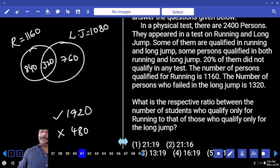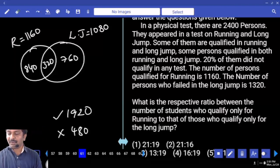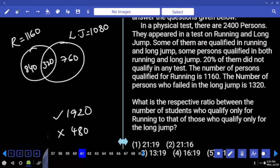What is the respective ratio between number of students who qualify only for running to those qualify only for long jump? Only running, only long jump. 840:760, cancel zeros, 84:76. 4 gets cancelled, 21 times, 19 times. 21:19, first option.